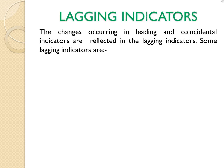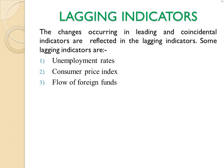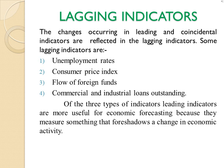Next we have lagging indicators. The changes occurring in leading and coincidental indicators are reflected in the lagging indicators. These indicate only after the change has occurred in the economy. Some lagging indicators are unemployment rates, consumer price index, flow of foreign funds into the economy, and commercial and industrial loans outstanding. Lagging indicators show how the economy has performed recently, but they are the least useful indicators for forecasting. Out of the three types, leading indicators are most useful because they measure something that foreshadows a change in economic activity.